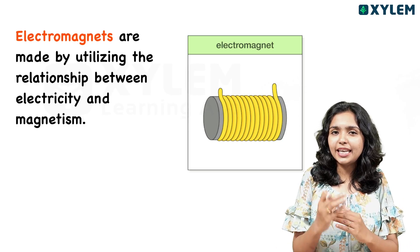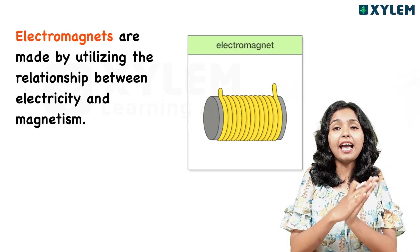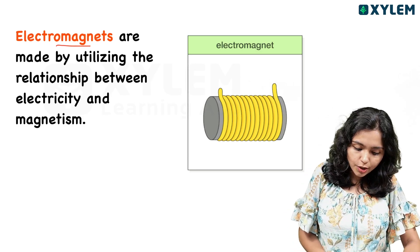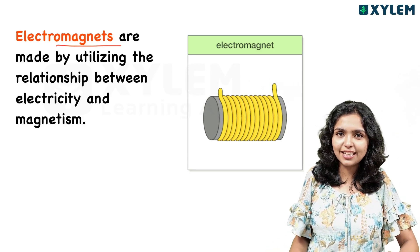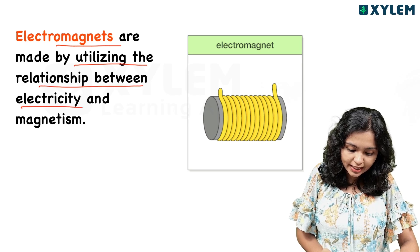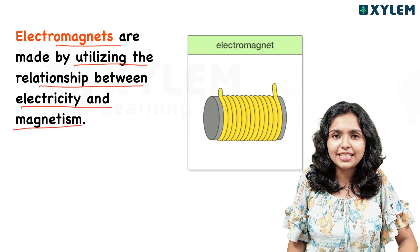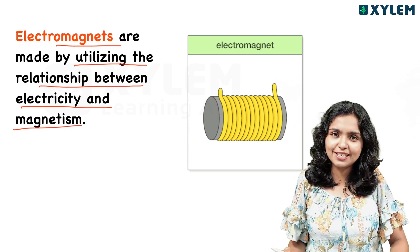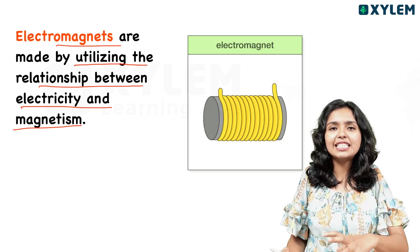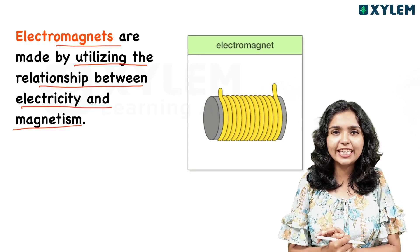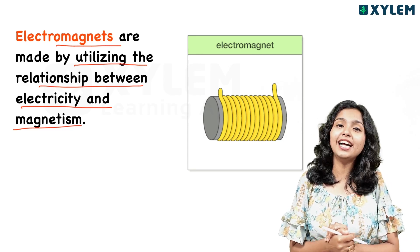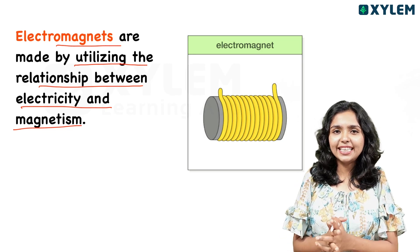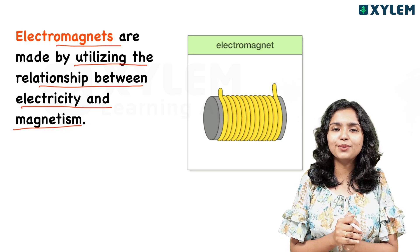This is the relationship between electricity and magnetism. We will discuss a few examples in the next class. If you are interested, please write in our comment box. We will go to the next class. Bye-bye.